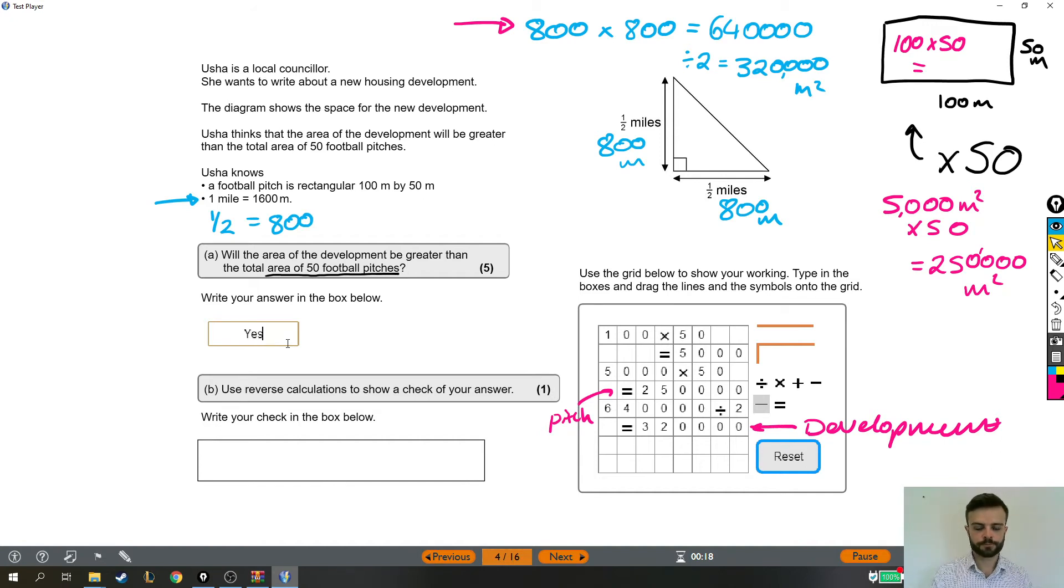Right, next we need to use reverse calculations to show a check of our answer. This is actually not too bad because all of our working out kind of lends itself to being done with a reverse calculation. So a quick reminder: when you do a reverse calculation, let's say you did like 18 minus 4 equals—hang on, not that—14, my bad.